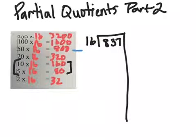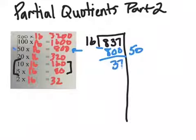So how many 16s makes 800? Well, that would be 50. So I put a 50 out here. 50 times 16 I already know is 800. And I'm going to get rid of a lot right now, and I'm down to 37.